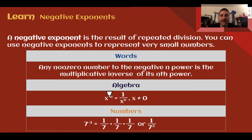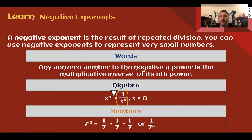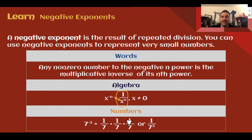For negative exponents, any non-zero number to the negative nth power is the multiplicative inverse of its nth power. A simpler way to say it: any number to the negative power equals 1 over that same thing to the positive power. We want a positive exponent, not a negative. So if you see a negative exponent, put it in the denominator and make it positive — as long as x is not equal to 0. For example, 7 to the negative 3 means dividing by 7 three times: divide by 7, divide by 7, divide by 7, giving us 1 over 7 to the third power. Same value, same exponent, moved to the denominator, exponent made positive.